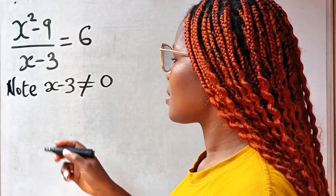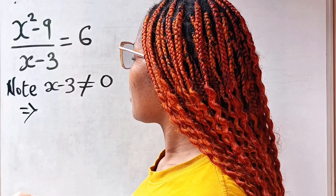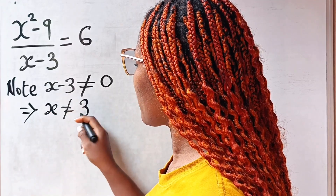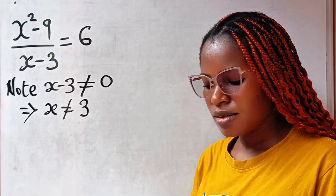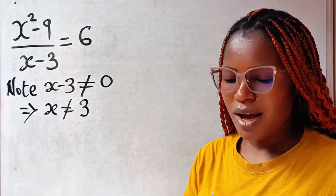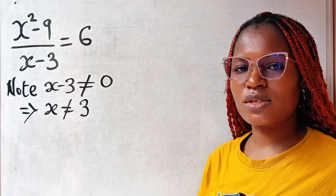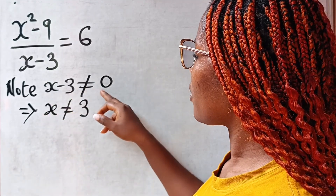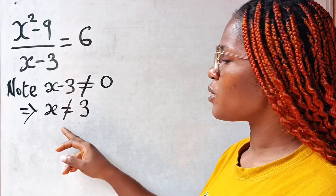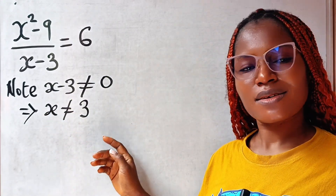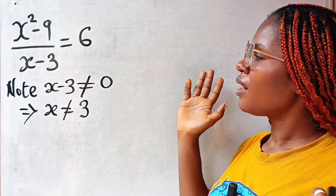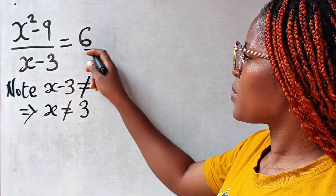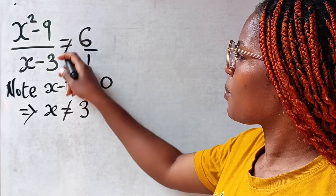This simply implies that x must not be equal to three, because it is only when three minus three that you get zero. So x must not be equal to three. Now let's solve the question.